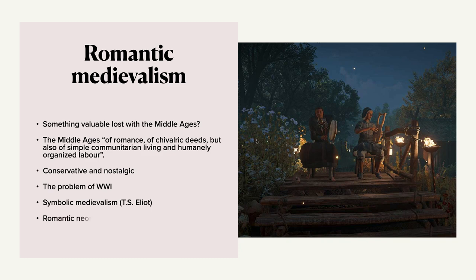If anybody has ever tried to read T.S. Eliot's The Wasteland — yeah, it's tough. If you know what you're looking for, you can pick the medievalism out of it, but only if you know what you're looking for. Now, neo-medievalism — which is something we're going to talk about in the next lecture — also has a romantic form, and this is what we see in something like Tolkien. Tolkien's depiction of the Shire is the best example of this: the idea that the romantic is the pre-industrial, the medieval is the pre-industrial in the romantic view of the medieval.